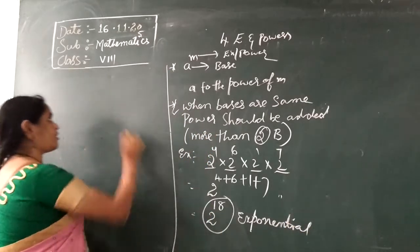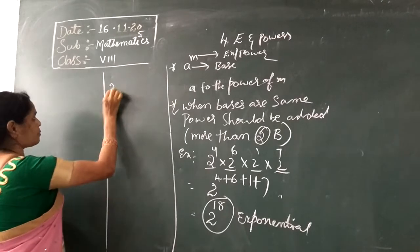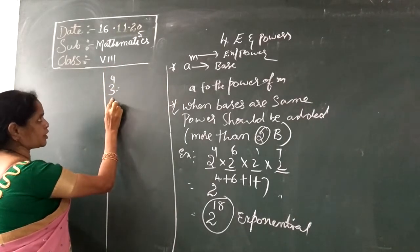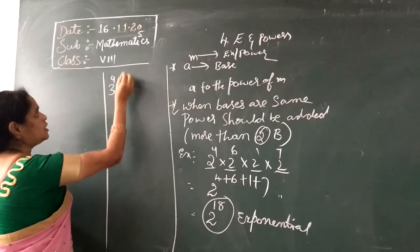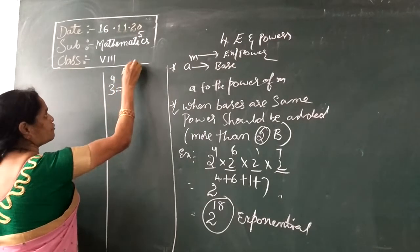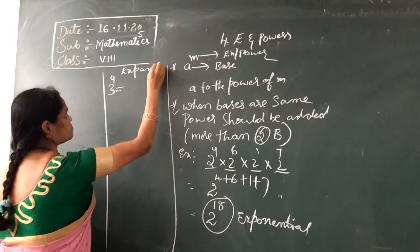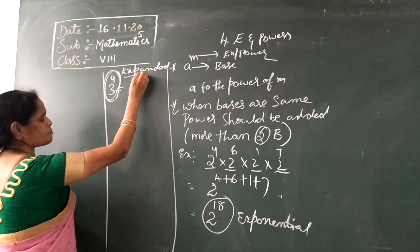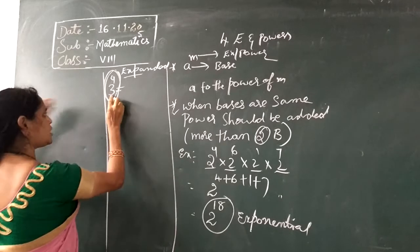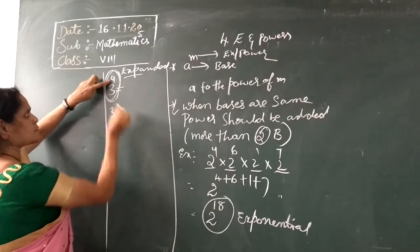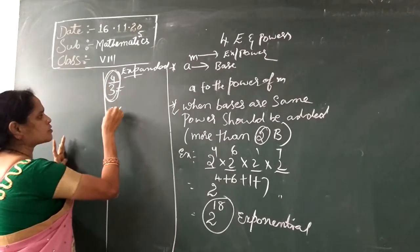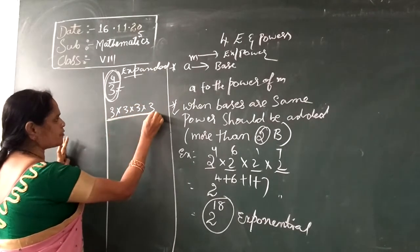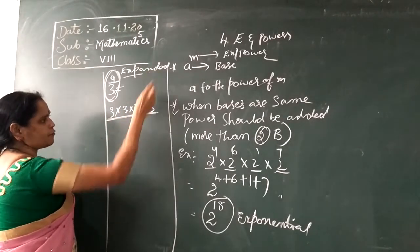Suppose they give you an exponential form like three to the power of four, and ask you to write it in expanded form. You have to repeat the base three, four times — that is three into three into three into three. That way of writing is called expanded form.